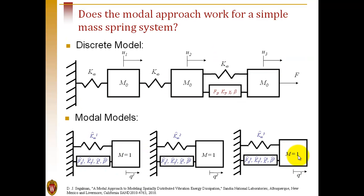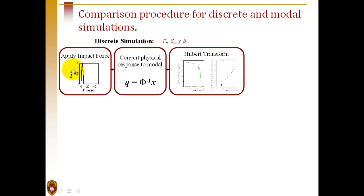Let's start with a very simple example involving a mass spring system. The goal is to replace this 3 degree of freedom system with three uncoupled modal models, each with joint-like behavior.